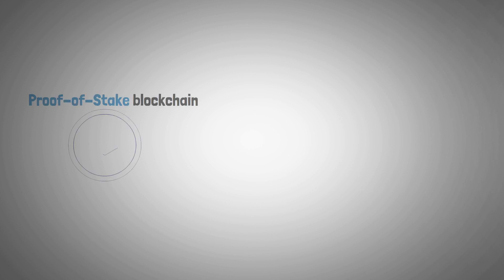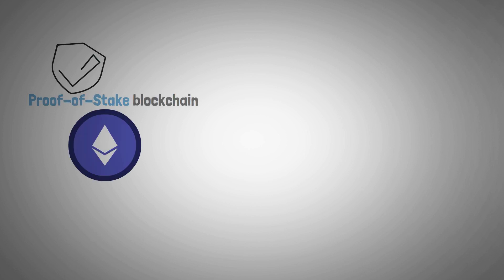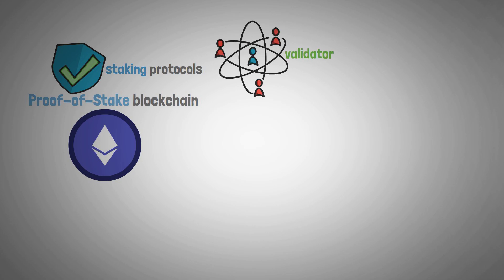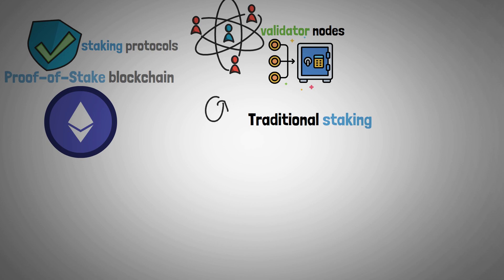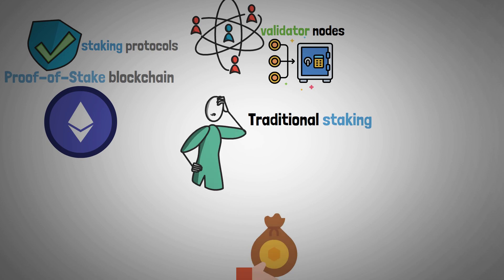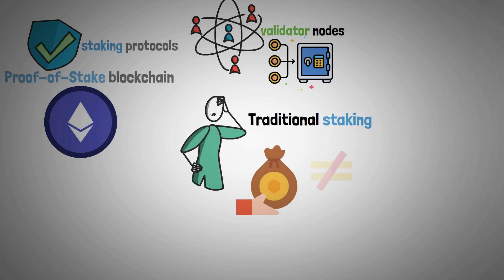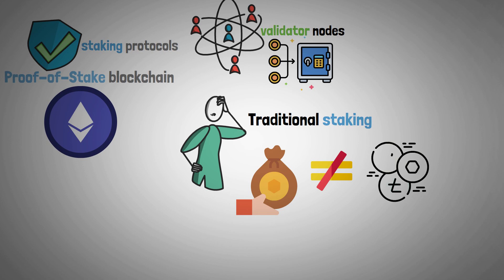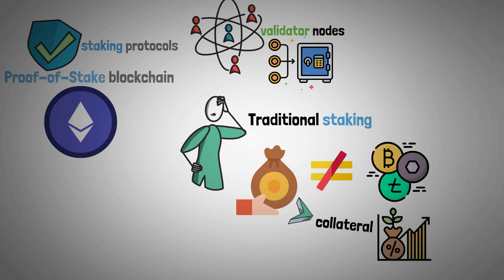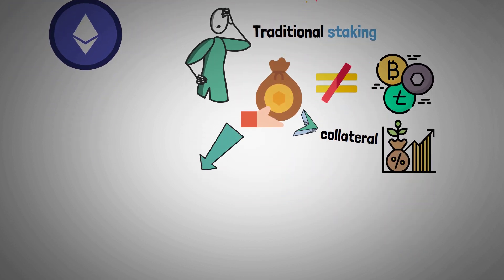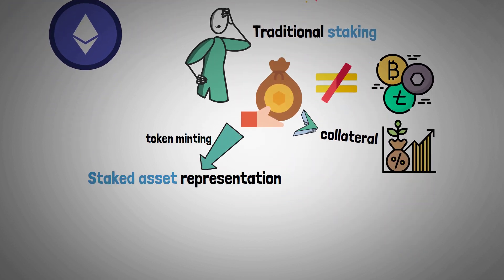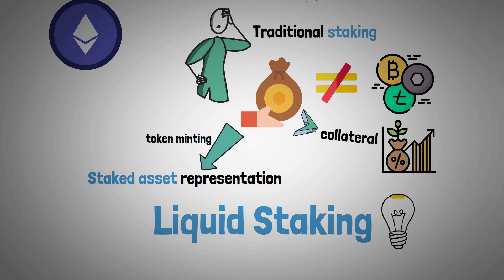Proof-of-stake blockchains like Ethereum are protected by staking protocols enabling network users to run validator nodes with their staked coins. But traditional staking's biggest drawback is that staked tokens cannot be exchanged for other assets or used as collateral to increase yield in the DeFi ecosystem. By allowing for further token minting that represents a staked asset, liquid staking seeks to address this issue.